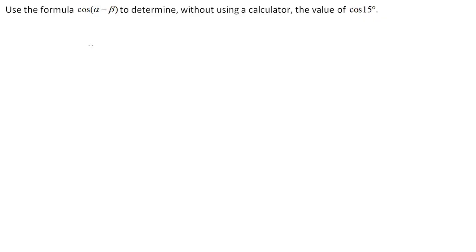Let's look at the following example: use the formula cos(θ − β) to determine, without using a calculator, the value of cos 15°. The first thing we need to do is express cos 15° in that compound angle form.